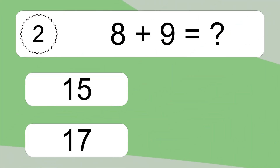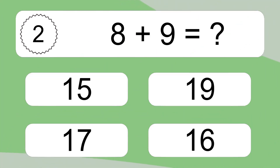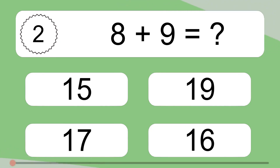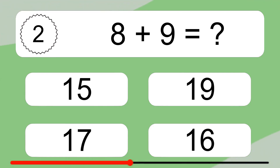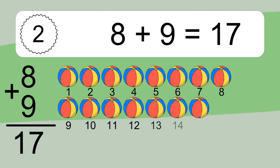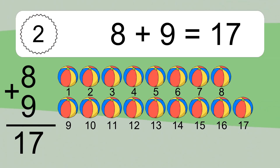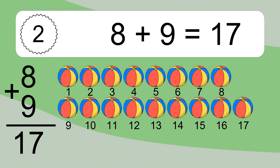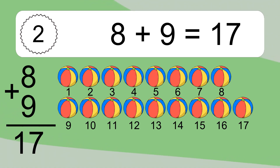8 plus 9 equals what? 8 plus 9 equals 17. Let's count it: 1, 2, 3, 4, 5, 6, 7, 8, 9, 10, 11, 12, 13, 14, 15, 16, 17.